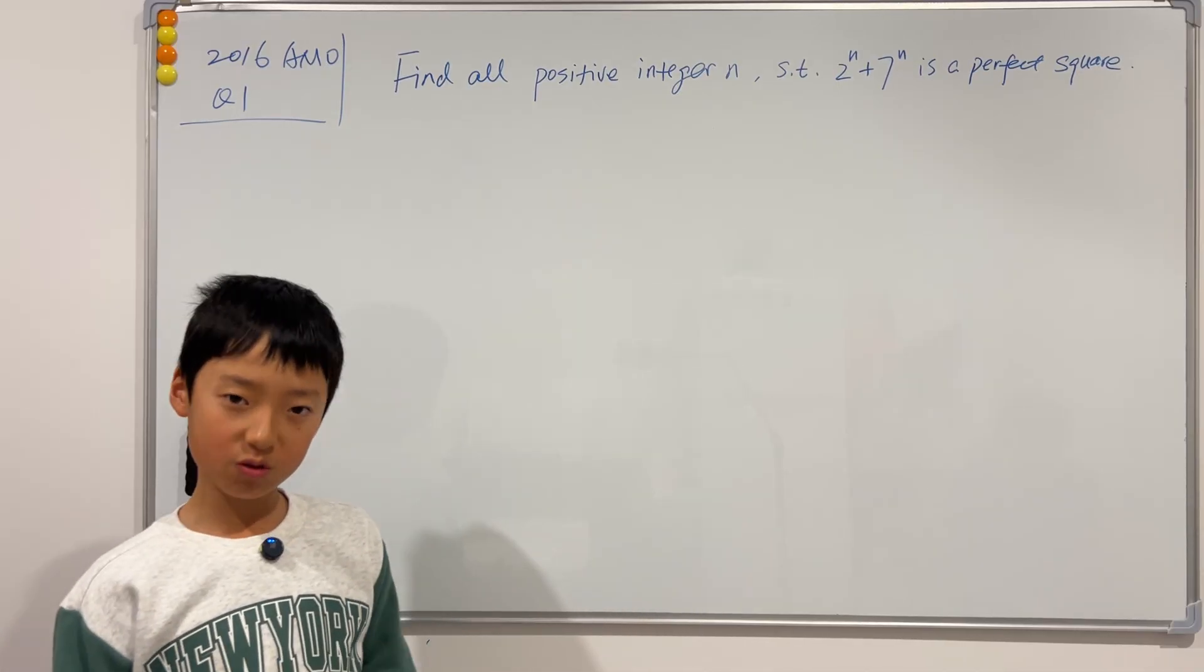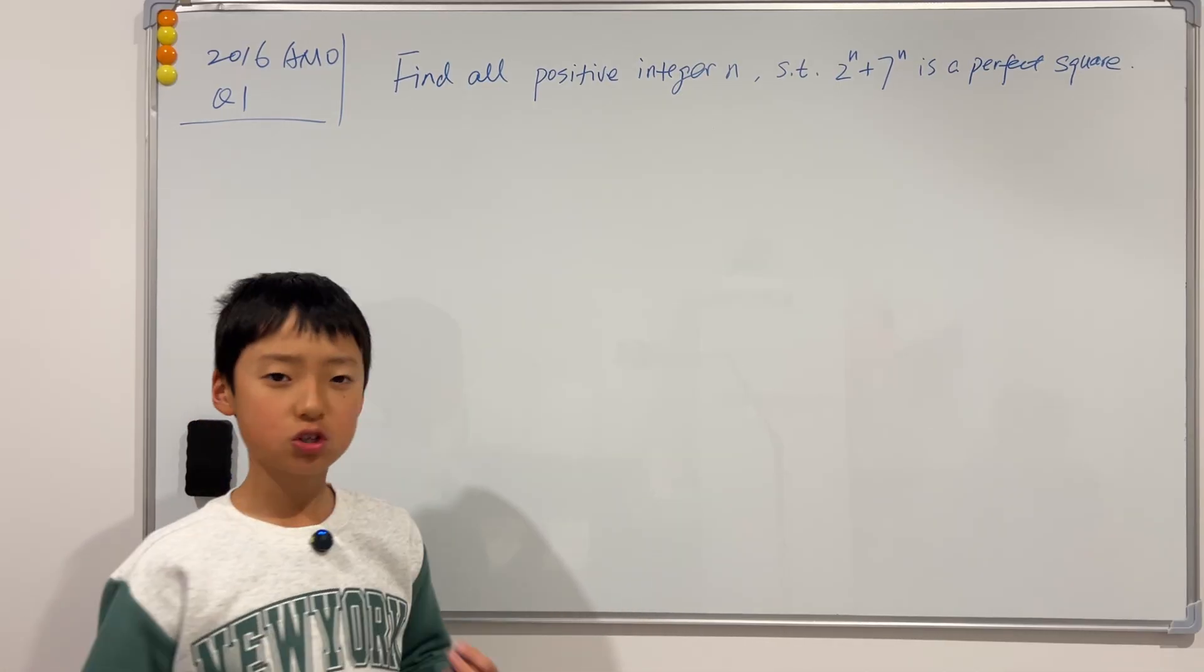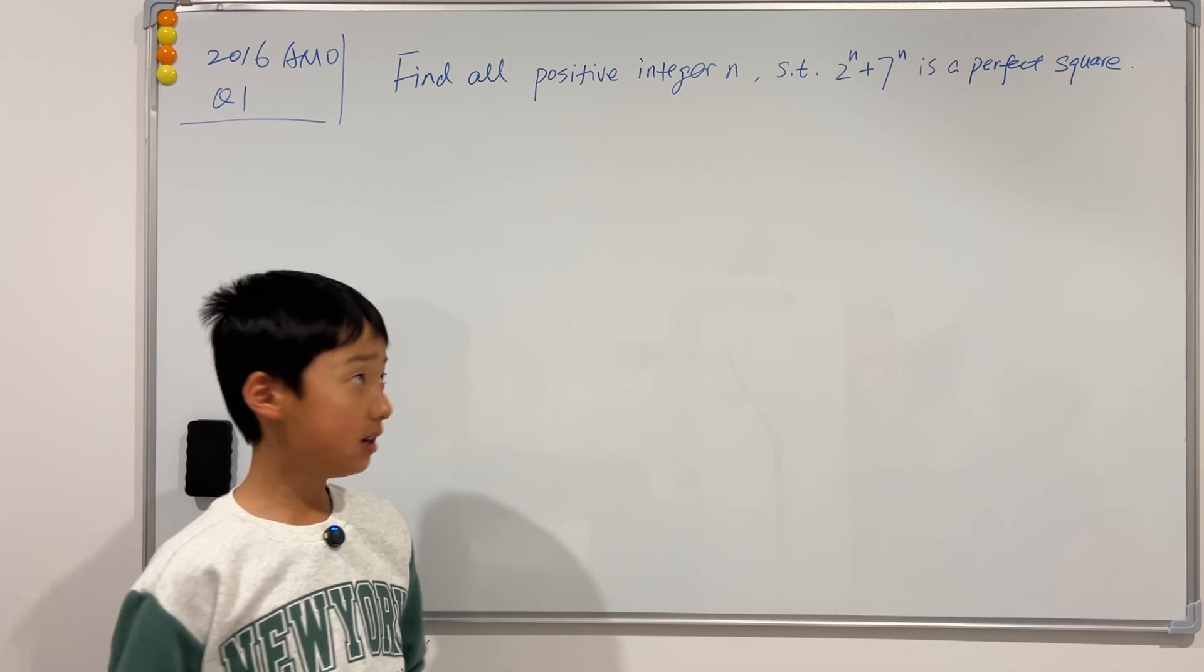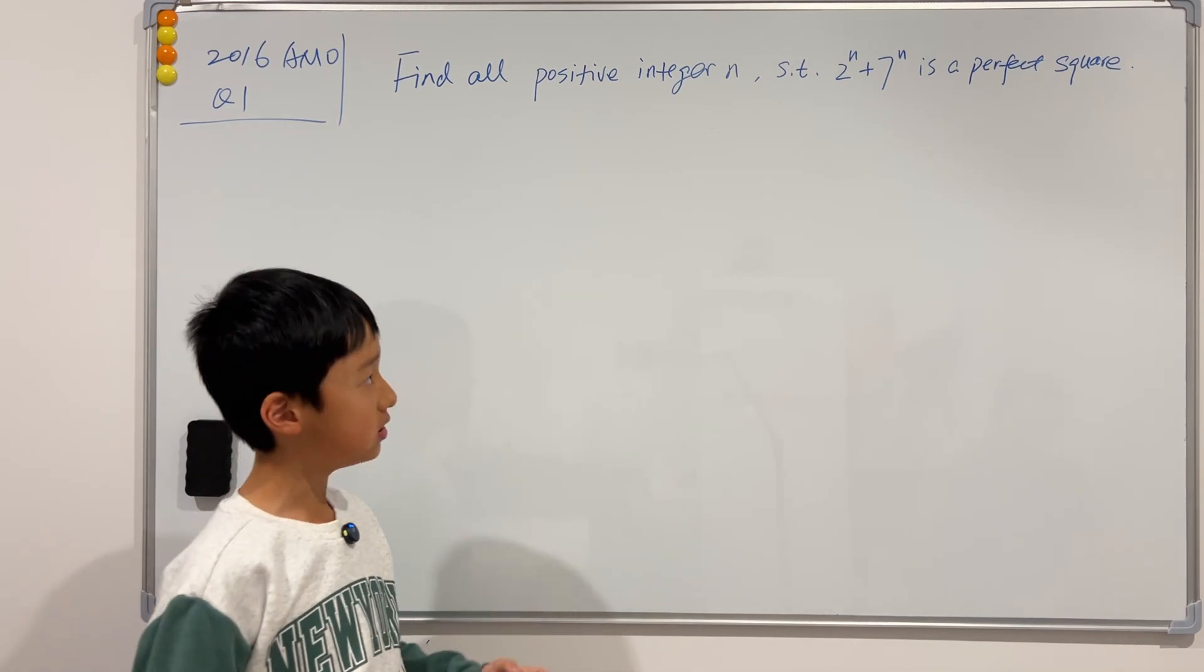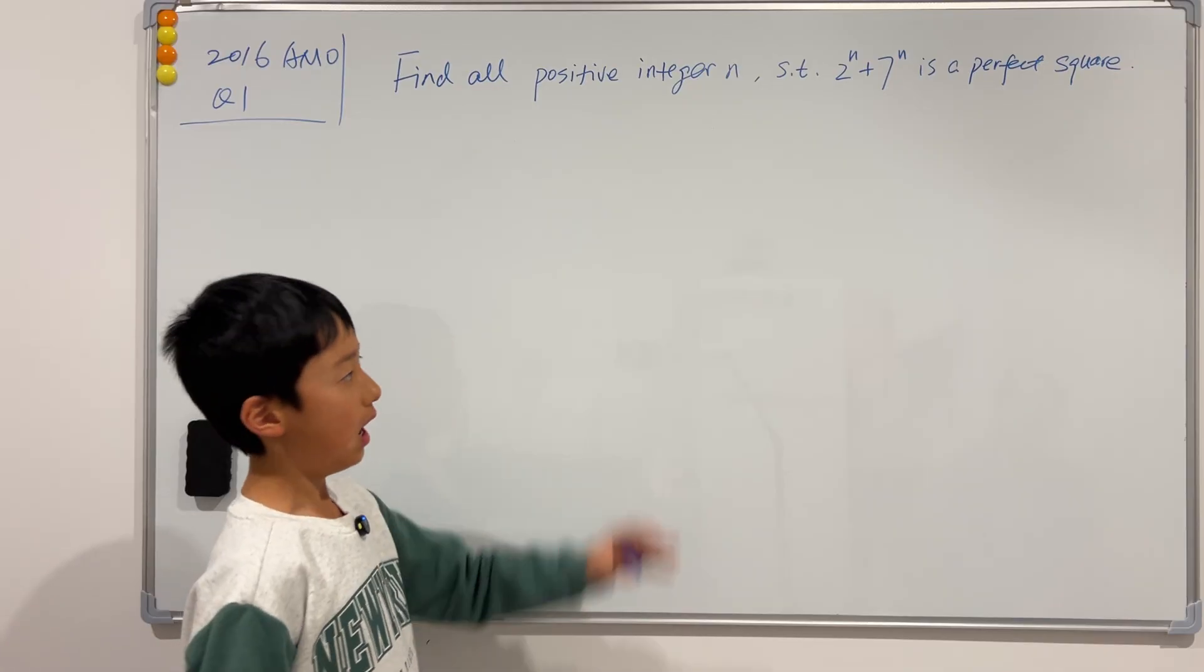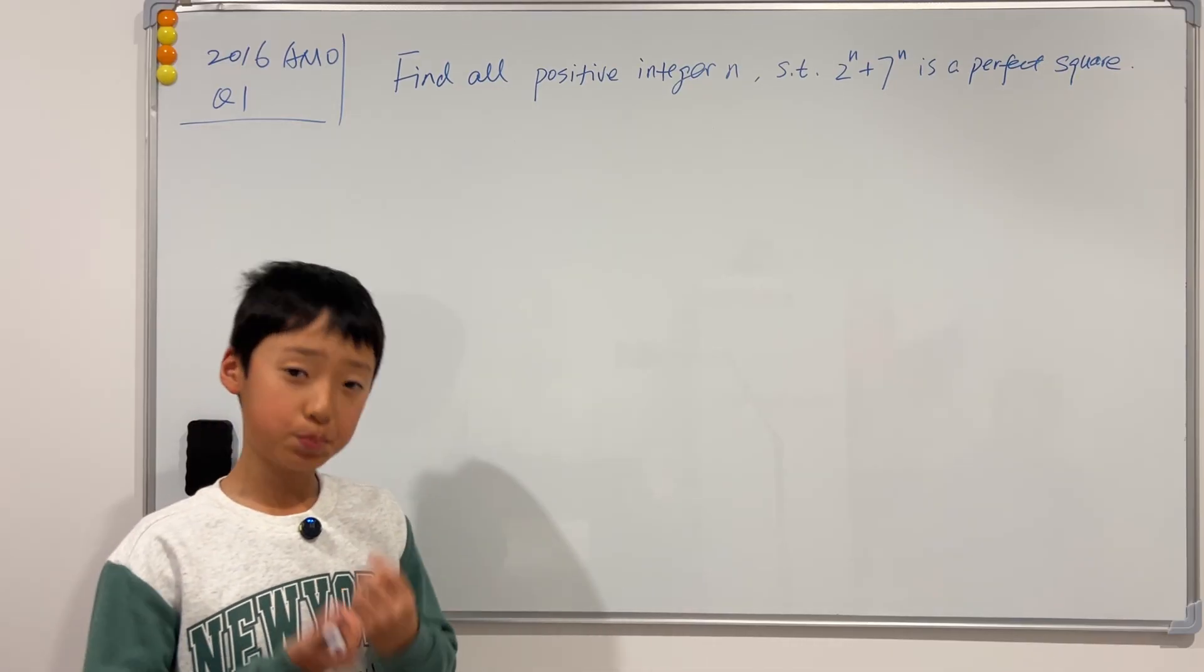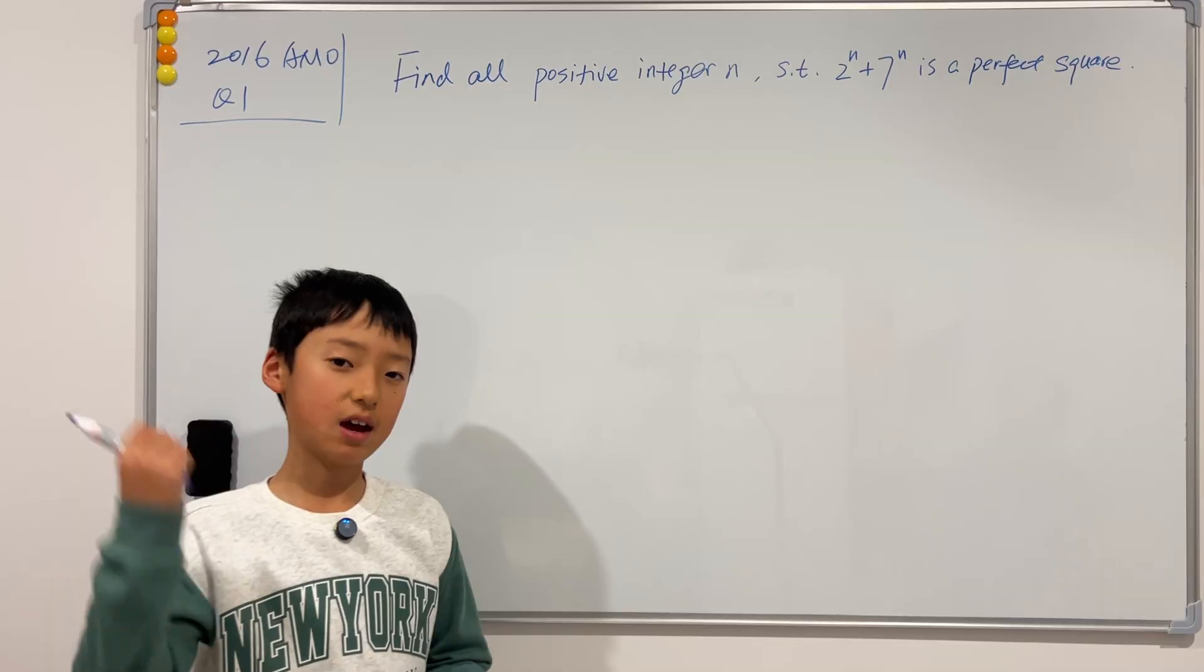Well, this question is actually from the 2016 AMO question 1. So this says that, find all positive integers n such that 2 to the n plus 7 to the n is a perfect square. Now, the first thing I'm going to do is, why don't we just try. When n is equal to 1, obviously this is true. So our below working out will all be when n is greater than 1.